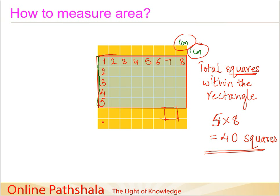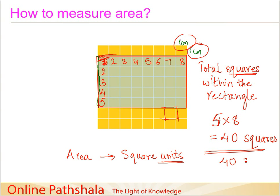We can measure area by superimposing the object on an imaginary grid of squares and counting how many squares fall within the boundary. The unit of area is square units, where the unit depends on whether we use centimeters or meters. In our case the rectangle occupies 40 square centimeters — that is, forty 1 cm by 1 cm squares.